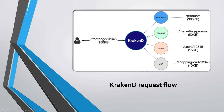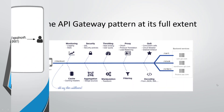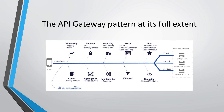On the next slide we can see the extended full pattern of KrakenD — for example, an app request for checkout goes to different backends like cart, stock, and orders. In the middle of that, KrakenD handles monitoring, security, throttling, proxies, queues, decoding, filtering, manipulation, aggregation, and caching.